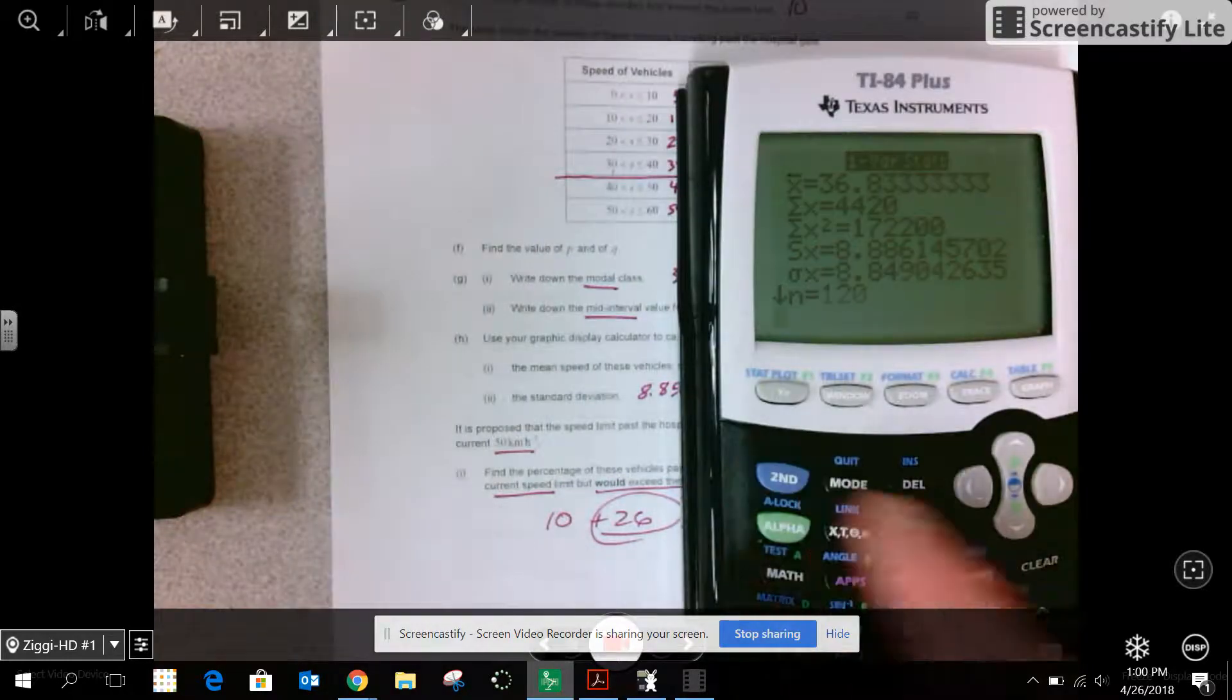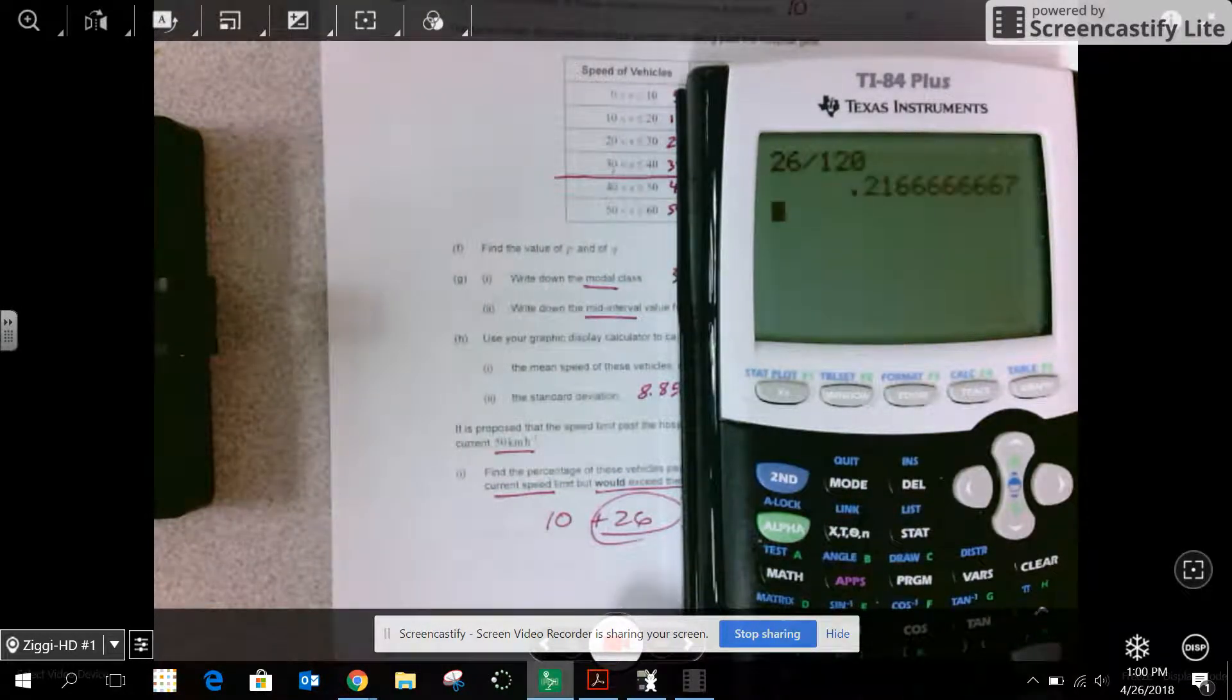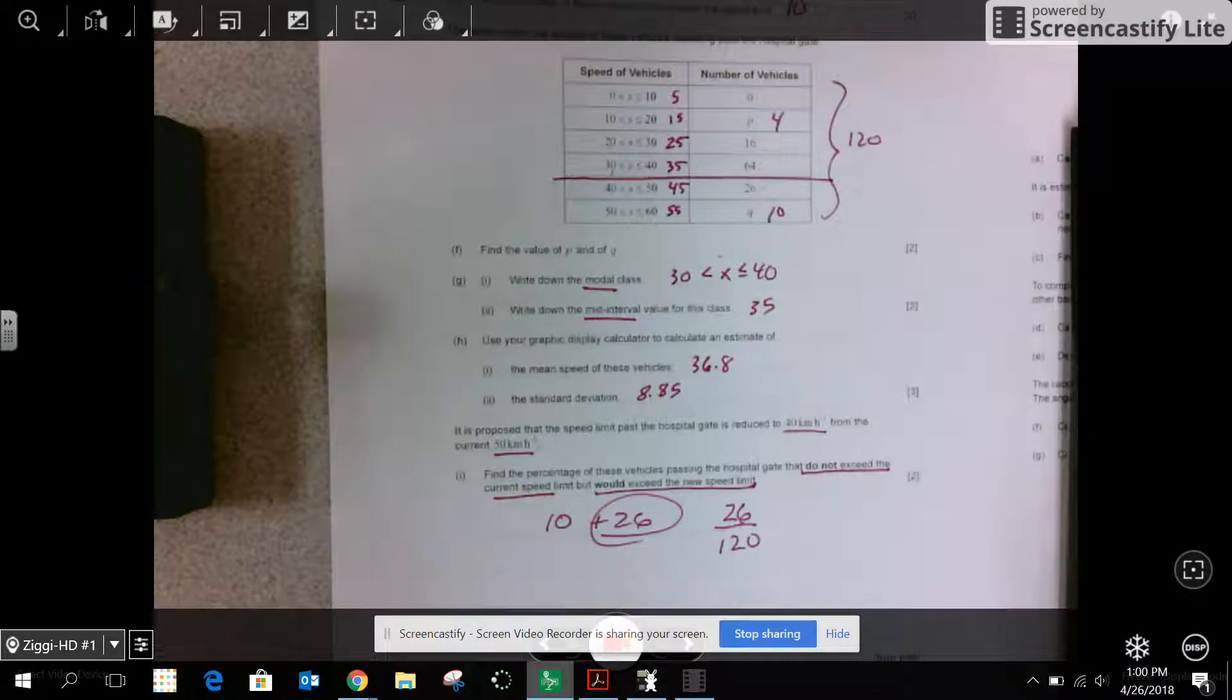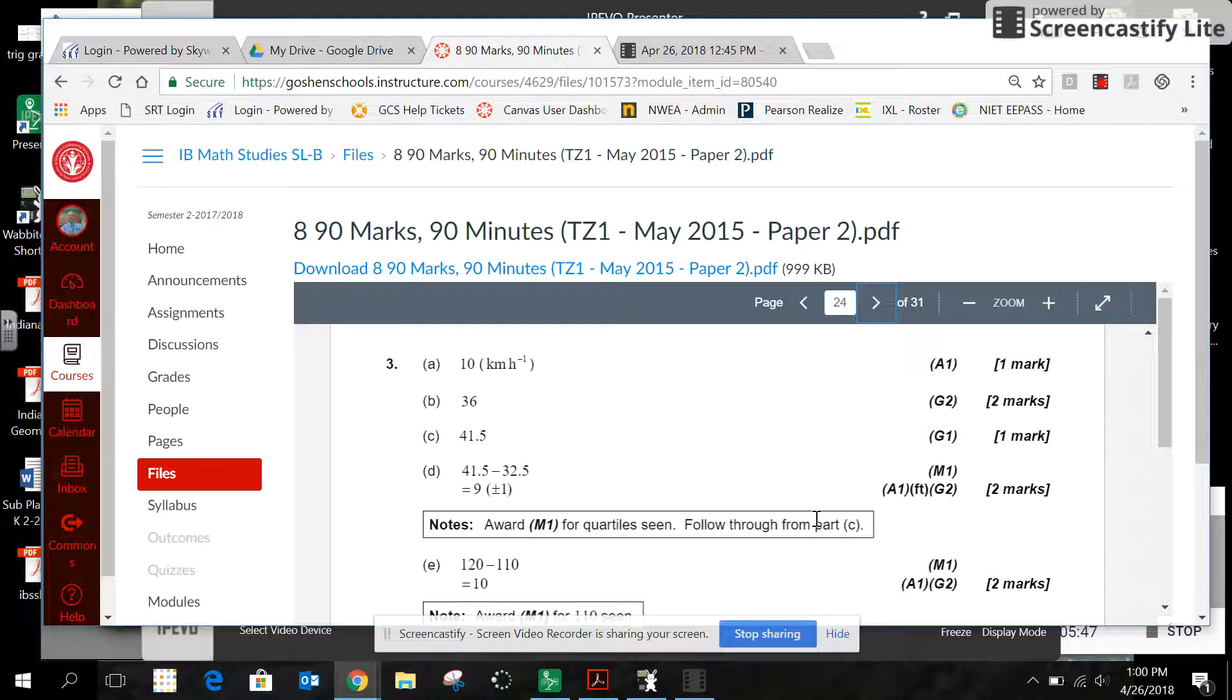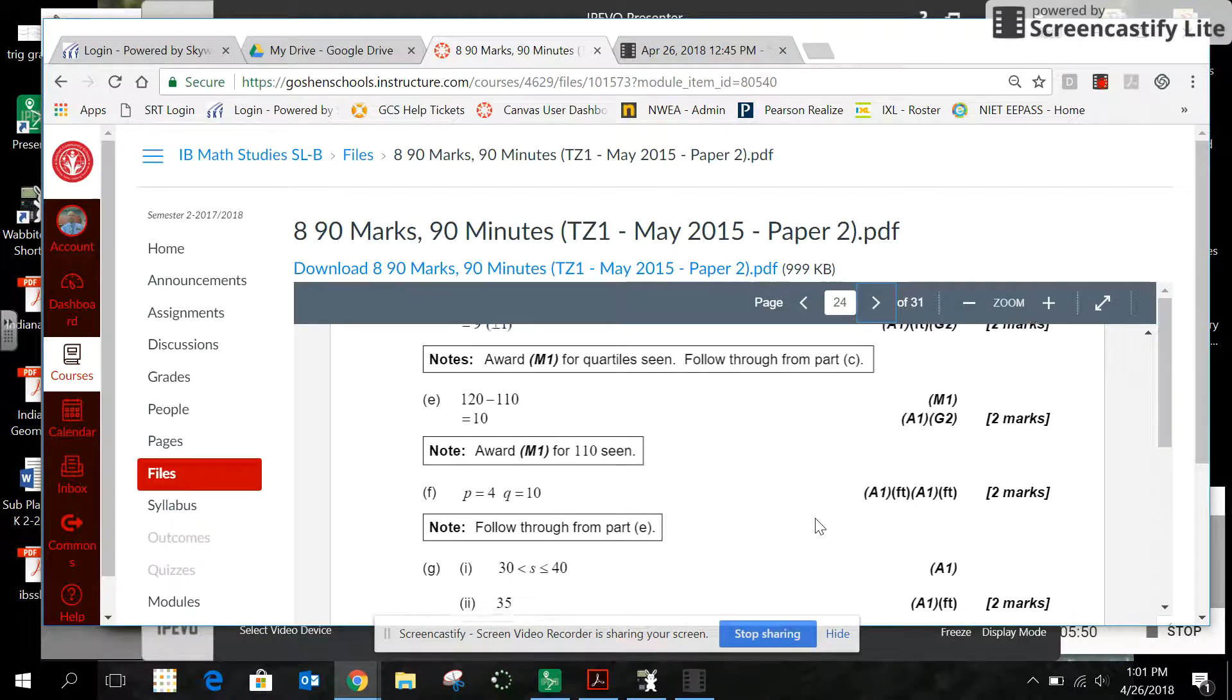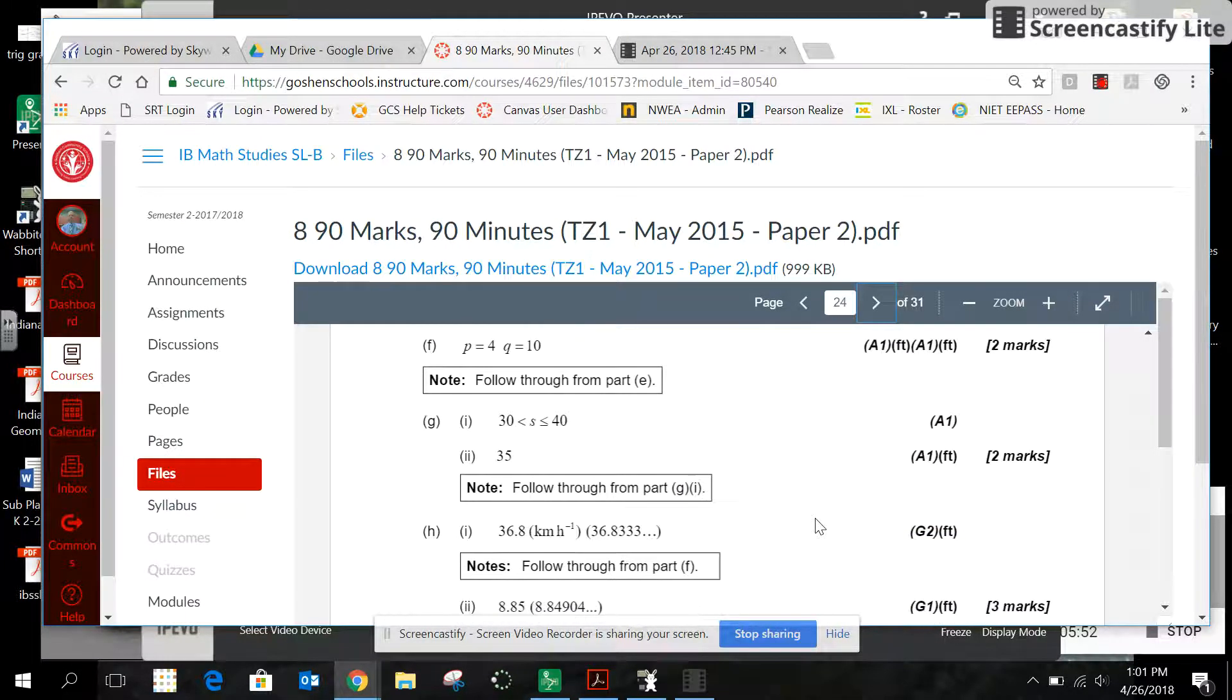Okay. So we're going to go look at the mark scheme. 10.36. So pretty much we're good to go there. Notice the working that you need to show. When they tell you to use your calculator, it's G2 and G1. You don't have to show anything else.